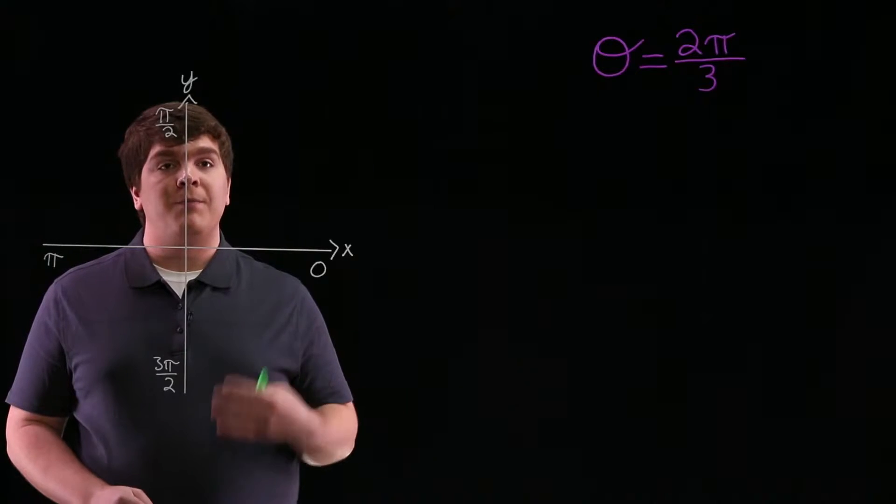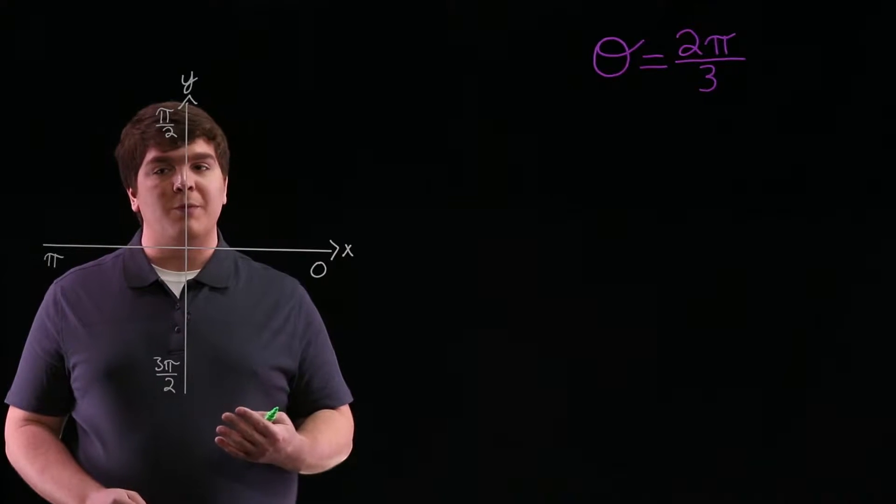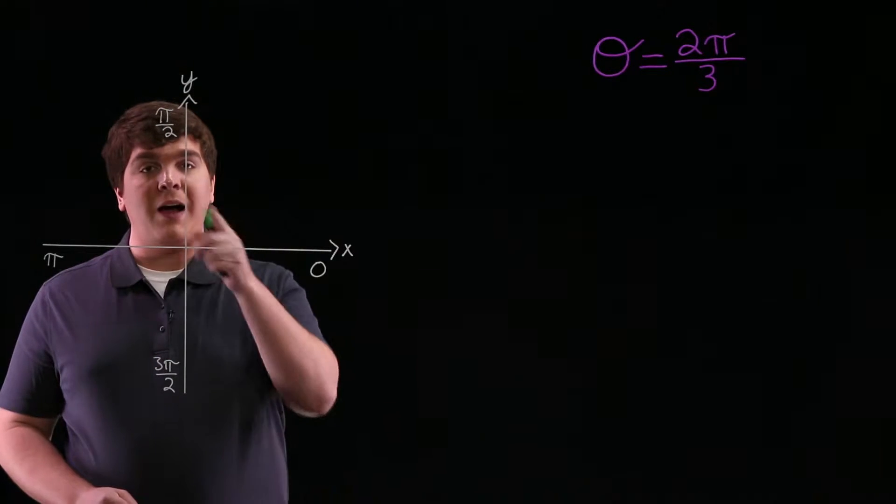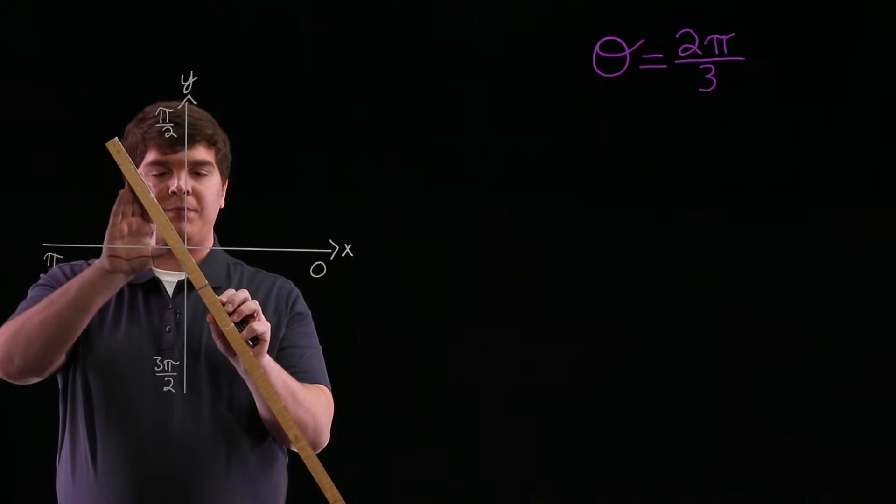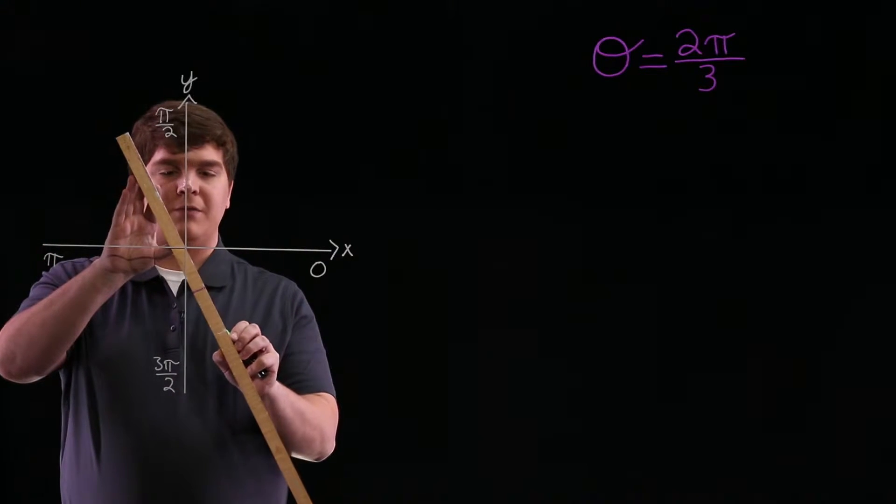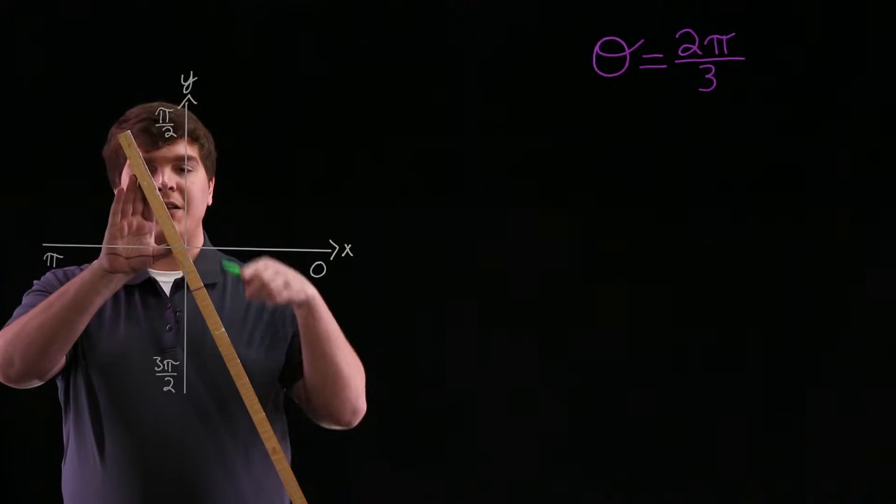Since we're looking at 2π over 3, that's really two-thirds of the angle π. So if here is the angle π, about 180 degrees, our angle theta, 2π over 3, will be two-thirds of that angle. So approximately here.